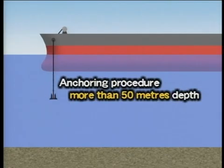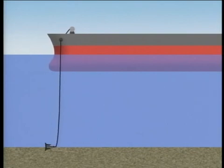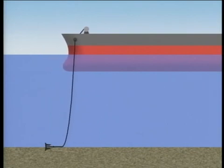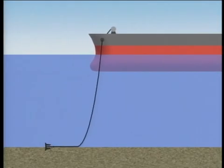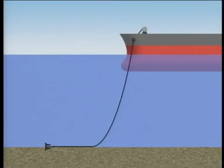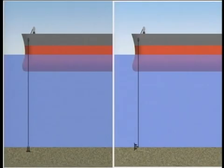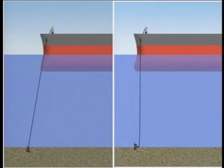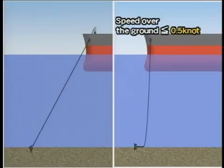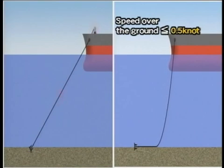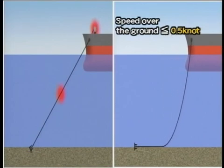When the depth of an anchorage exceeds 50 metres, the anchor and the whole cable required are laid down onto the seabed by the walk-back method. Sternway should be maintained under 0.5 knots once the anchor has touched the bottom, because too large a speed difference between sternway and walk-back may cause parting of the anchor cable or damage to the windlass due to excessive strain in large vessels.